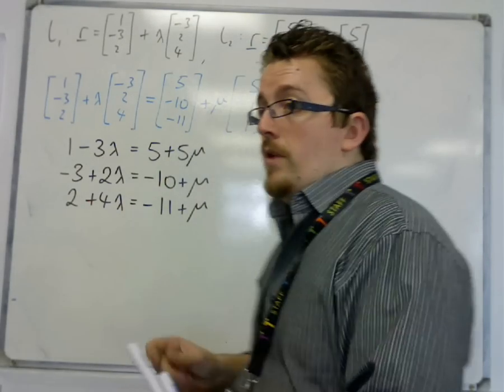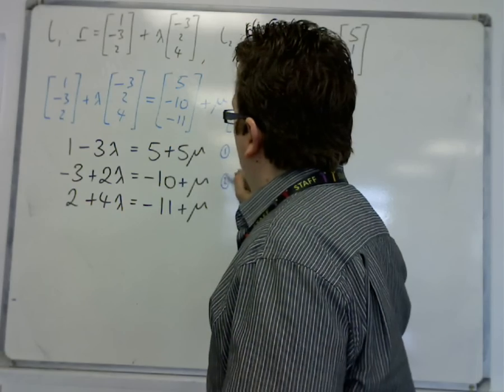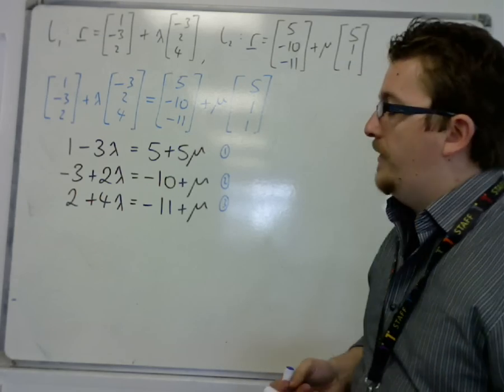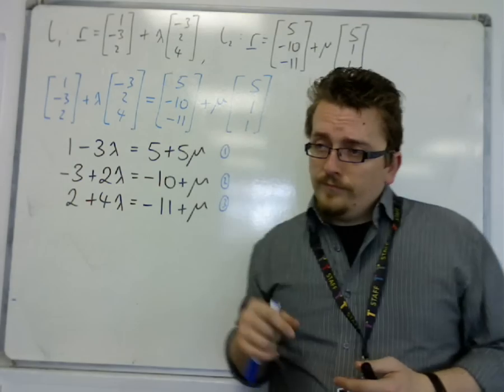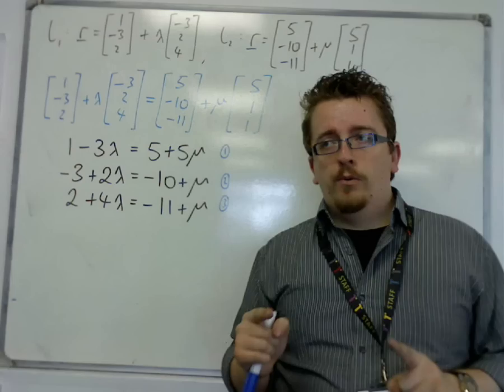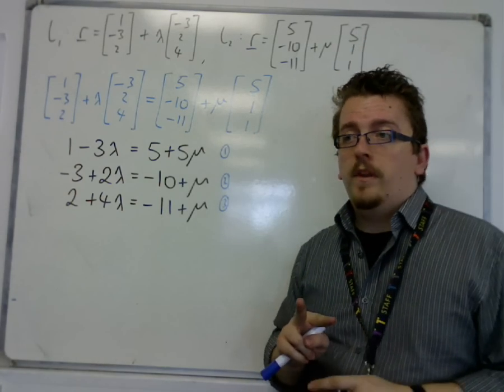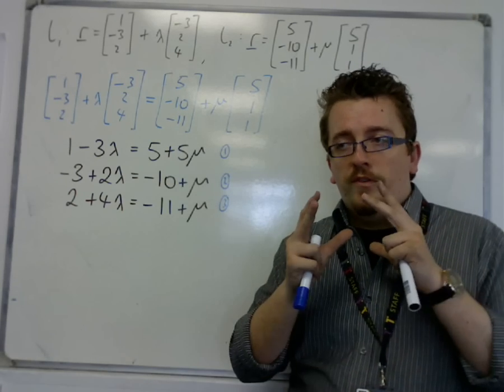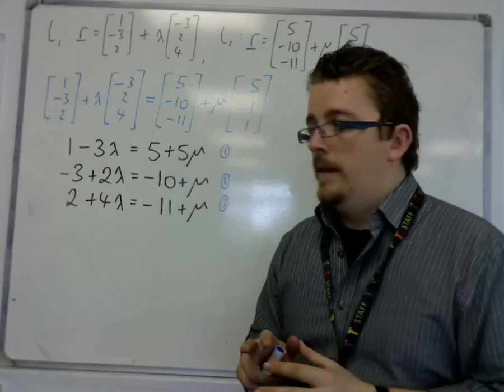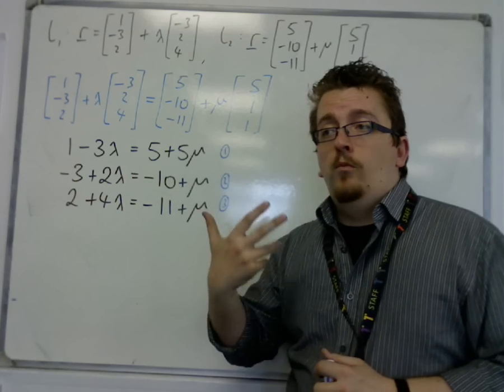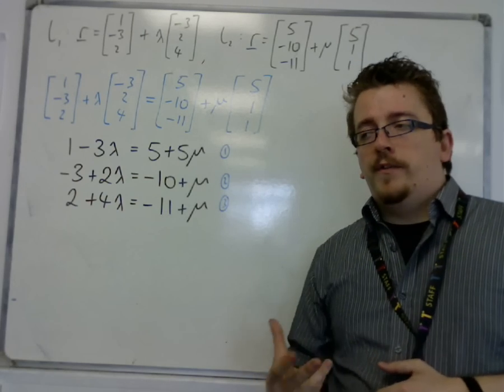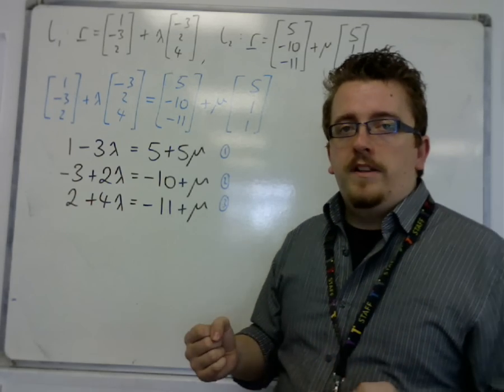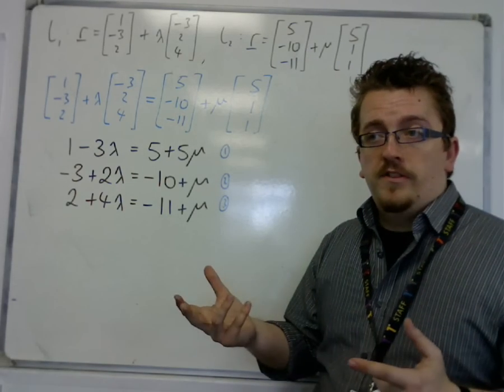So we have three equations with two unknowns, so you'll probably be a little unused to having three equations to solve simultaneously. So the way to do this is to choose two of them and work with only two of them, and then once you have a lambda and a mu, substitute them into the equation you did not use originally. So the point of that will be that if the lambda and mu works in the final equation, then yes, the two lines intersect. If they don't work, then the two lines must be skew lines or they are parallel.